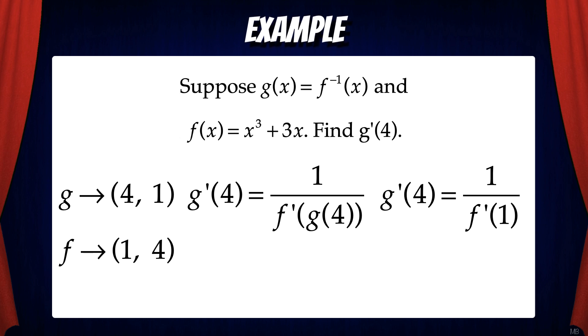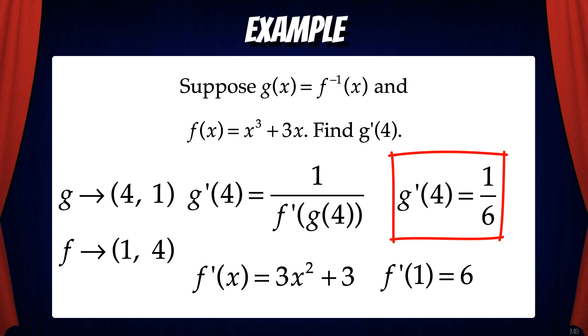Now we need to find f prime of x. From the power rule, we get 3x squared plus 3. And f prime of 1 equals 6. Now we can substitute this back into our equation and we have g prime of 4 equals 1 sixth. And that's what we were looking for.